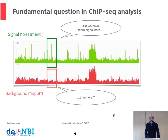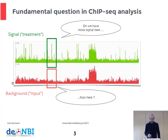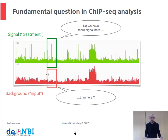The fundamental question in ChIP-seq analysis is very similar to signal analysis. We have a signal — the treatment, which is the result of the chromatin immunoprecipitation shown in green — and we have a reference background, also called input, displayed here in red. The question is: at each position on the genome, do we have significantly more signal in the green window than in the red window? We're looking for regions where we have a significant enrichment of the signal compared to the background measurement.